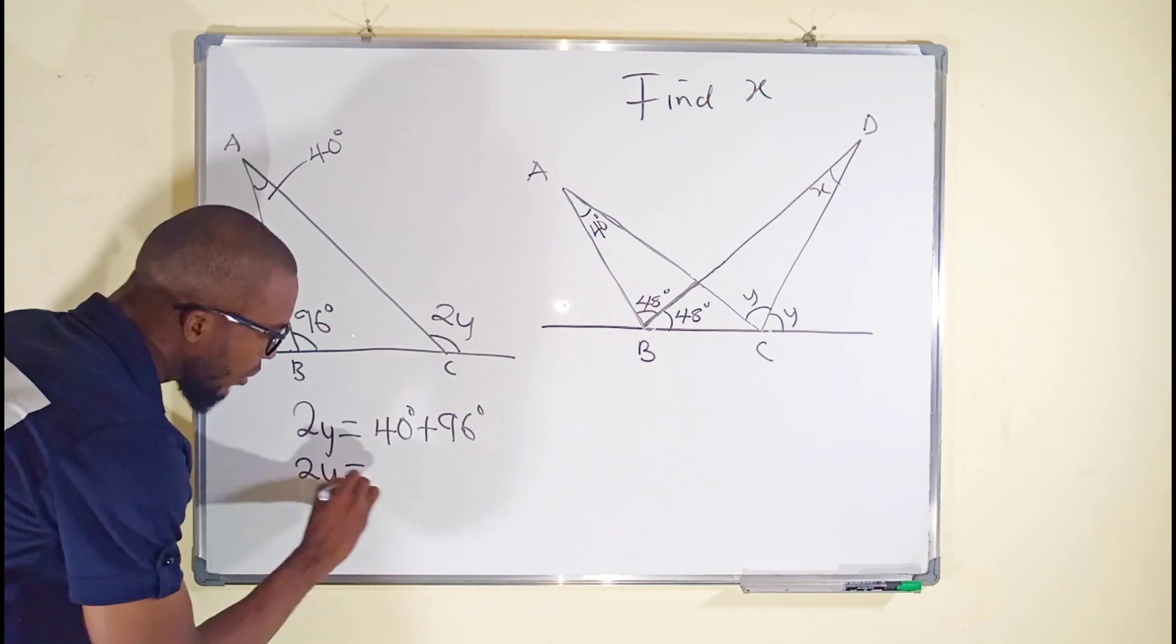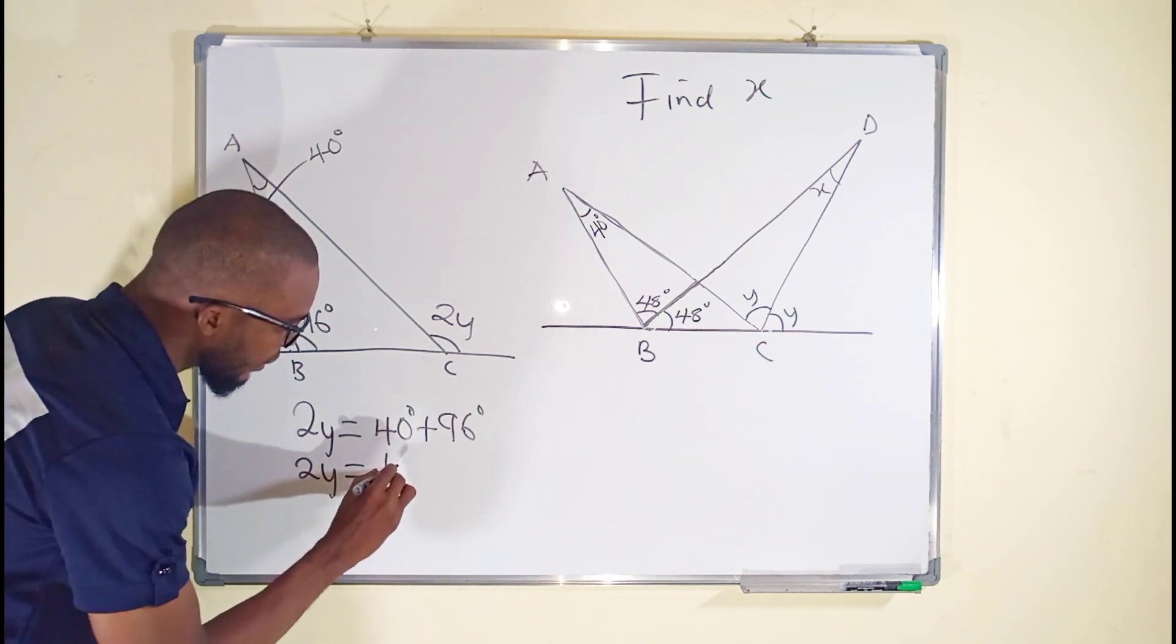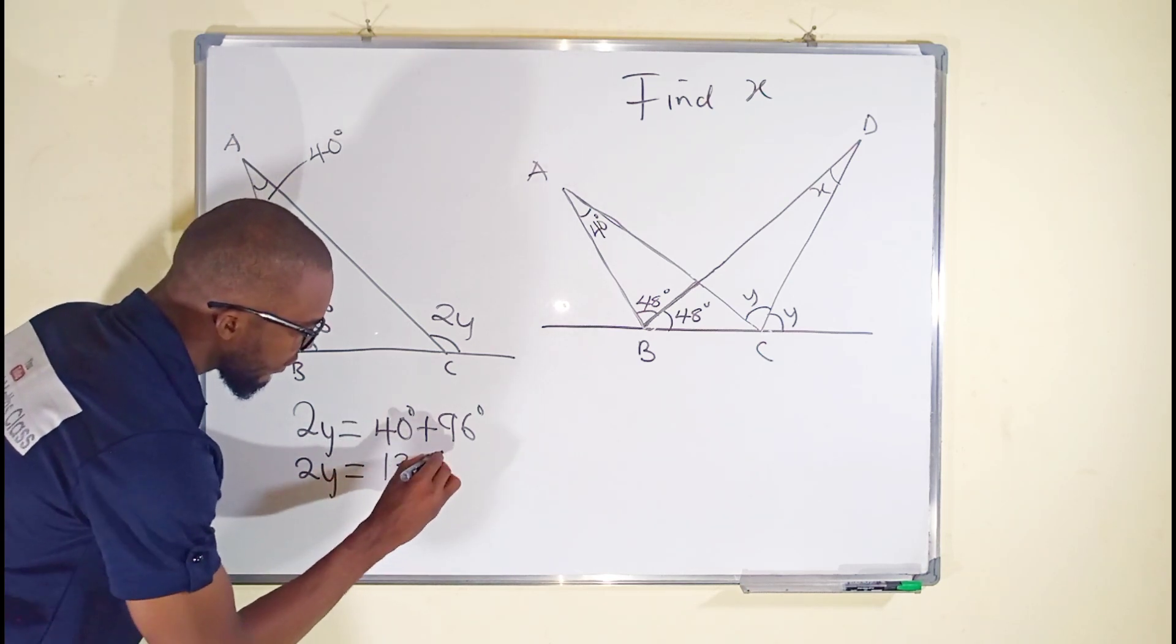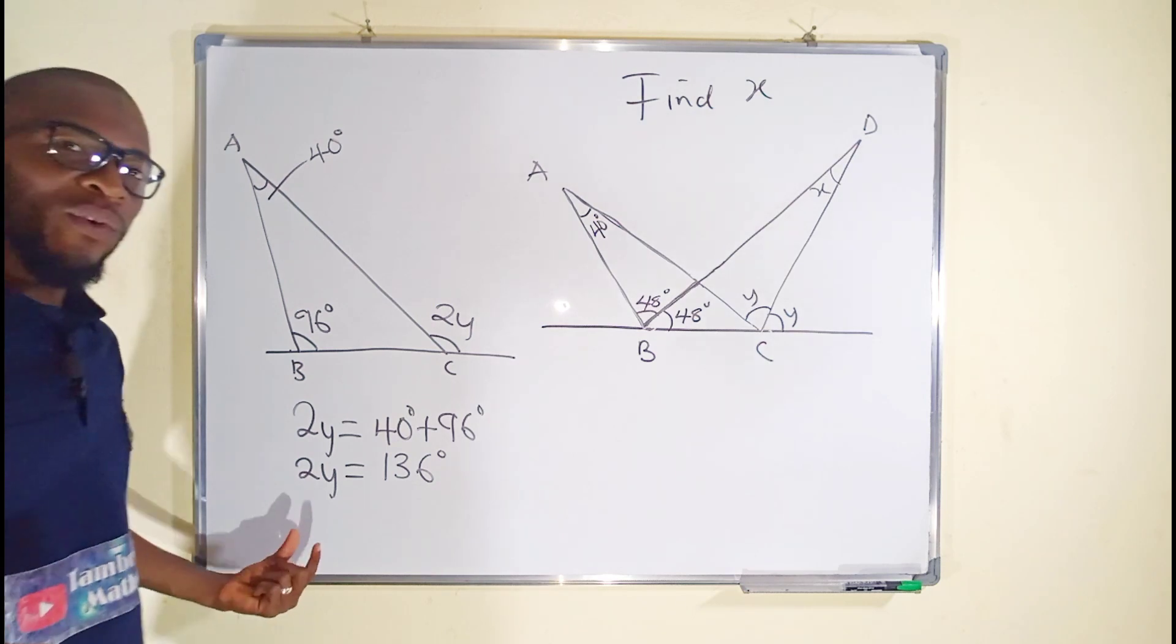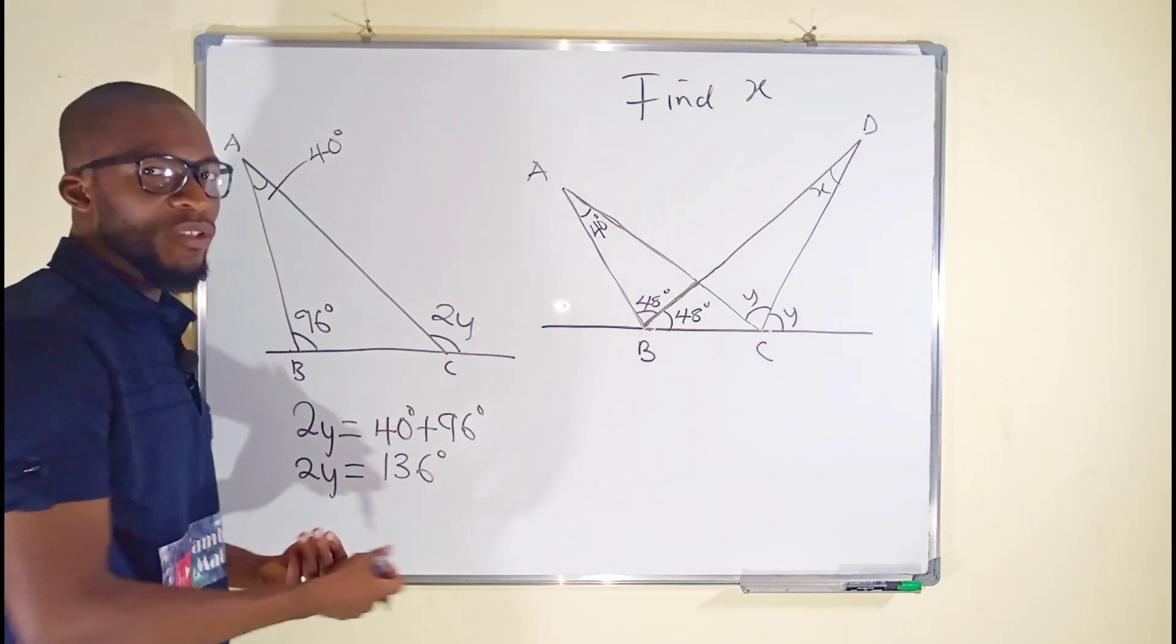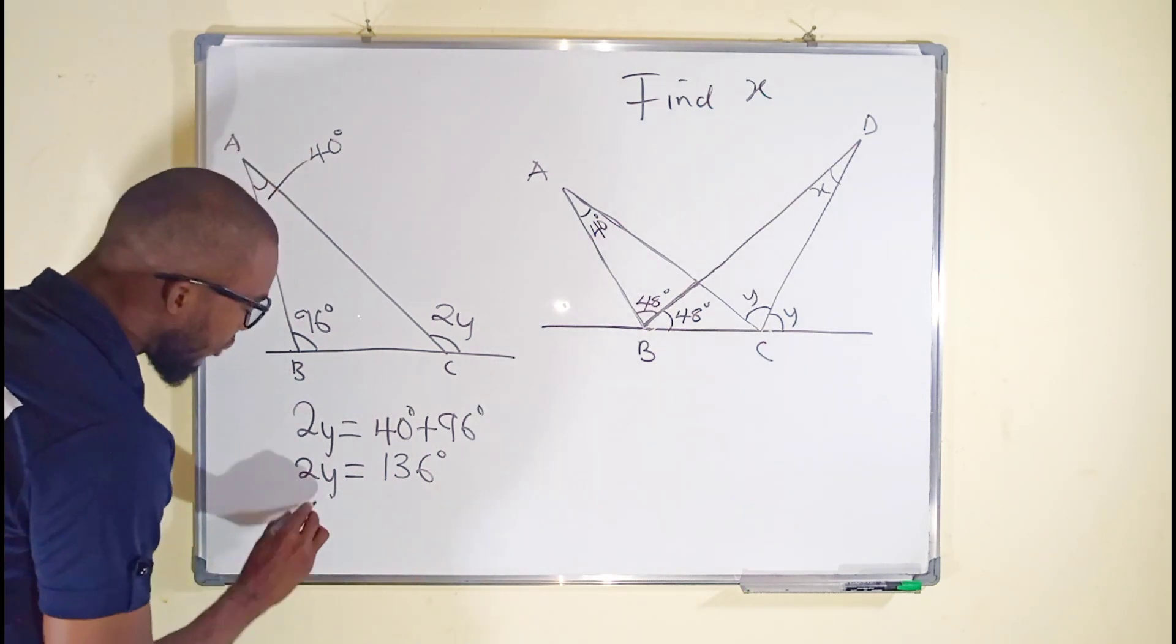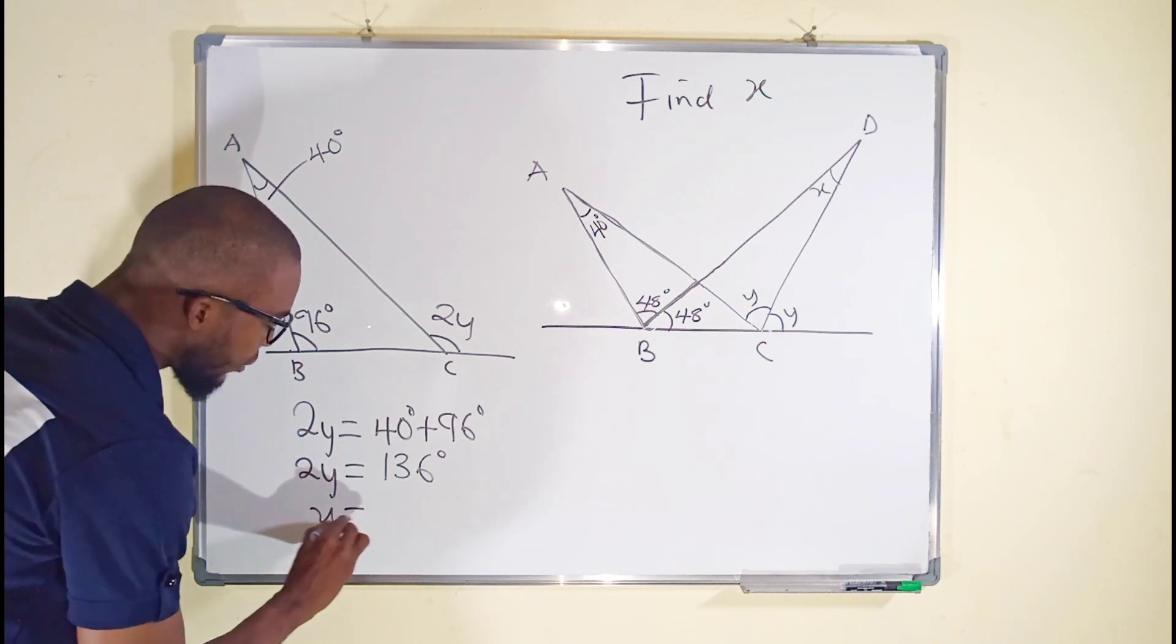2y will be equal to 136 degrees. We are looking for the value of y, so we can divide both sides by 2. Dividing this by 2, dividing this by 2, we have only y.